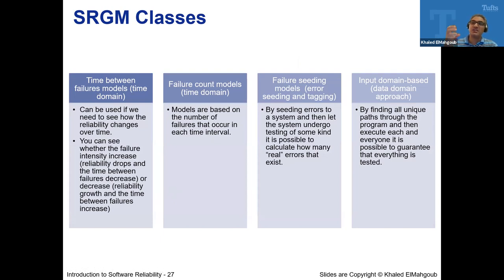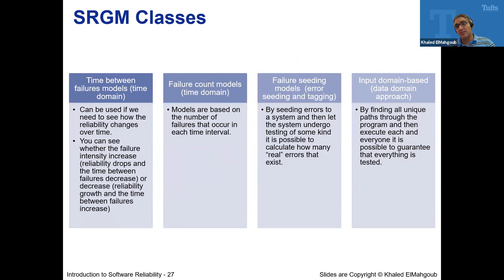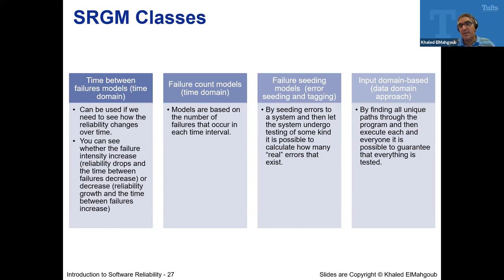Different categories of models: one is the Time Between Failure model, where you get functions related to time between failures. Another is the Failure Count model — which is what we're talking about today — how many failures you have and how they change with testing time. There's also Failure Seeding models, where they intentionally seed known failures to reveal unknown ones, and Input Domain-based models that find unique paths and execute every possible combination.